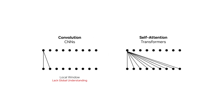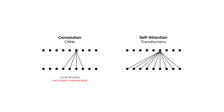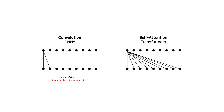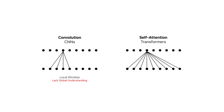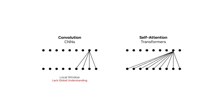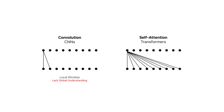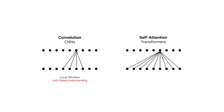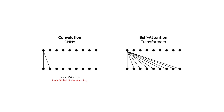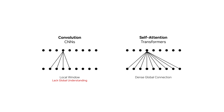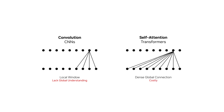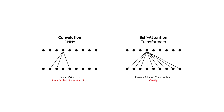Vision Transformers, on the other hand, use self-attention — a mechanism in deep learning that learns to attend to different parts of the input and represents their relationships. Self-attention enables more global understanding, but it can be costly in both data and compute power.